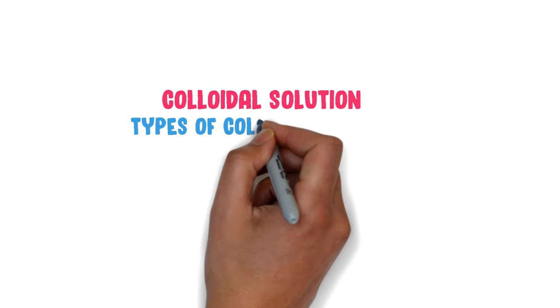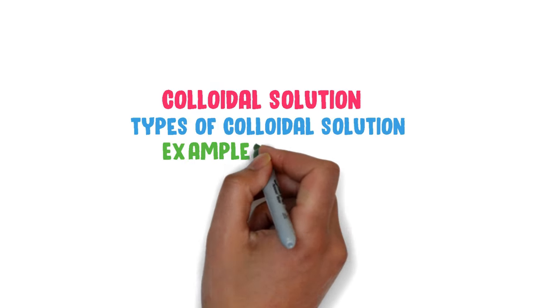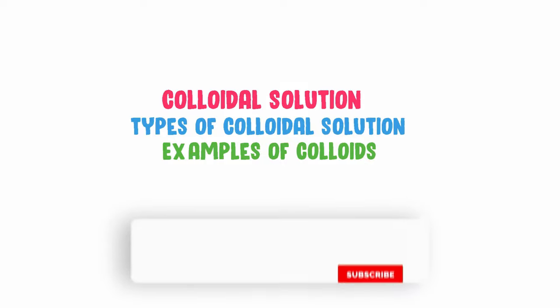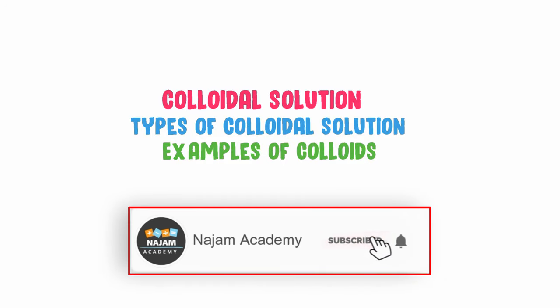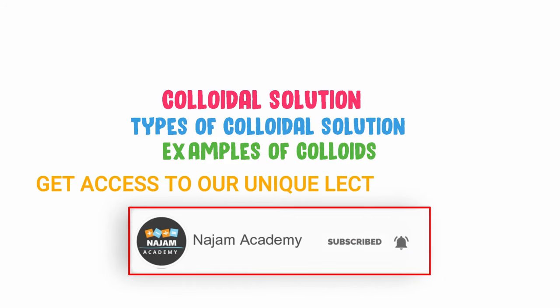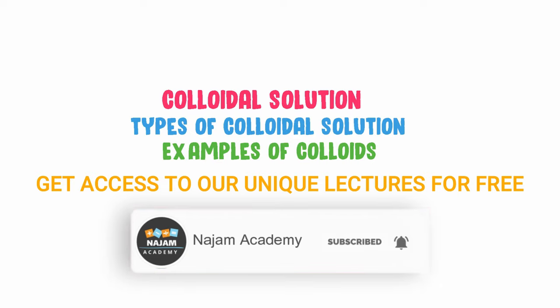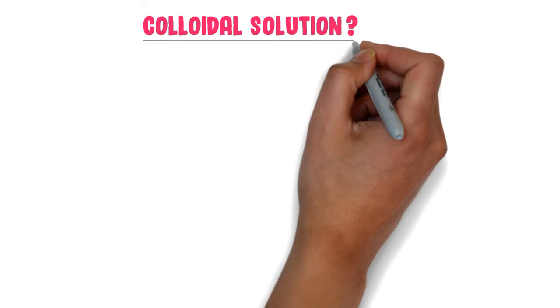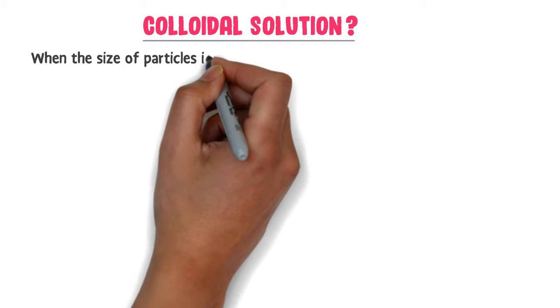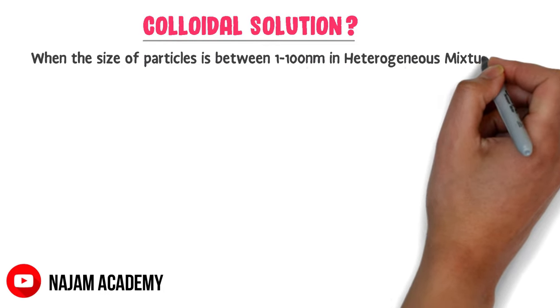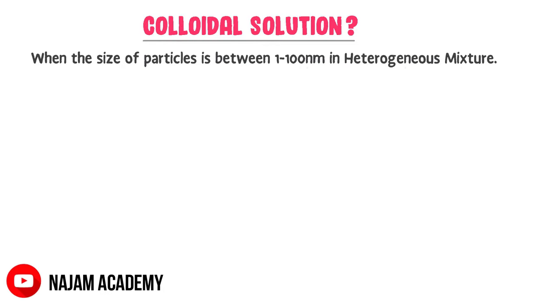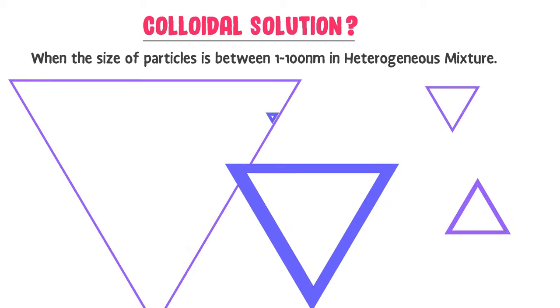Colloidal solution — types of colloidal solution and examples of colloids. When the size of particles is between 1 up to 100 nanometers in a heterogeneous mixture, we call it a colloidal solution, or just colloid.